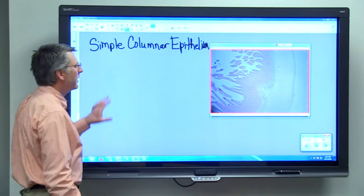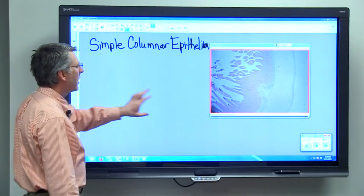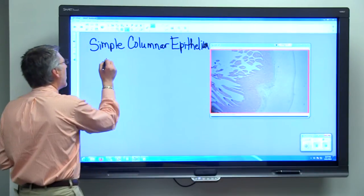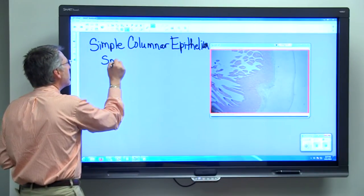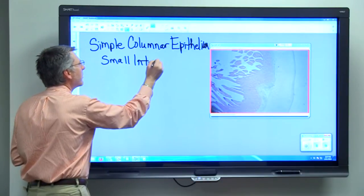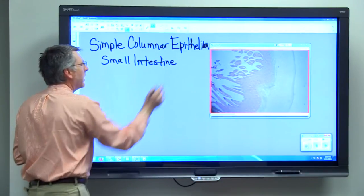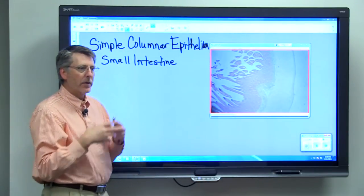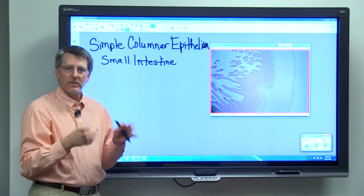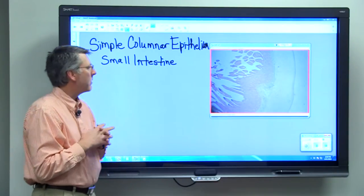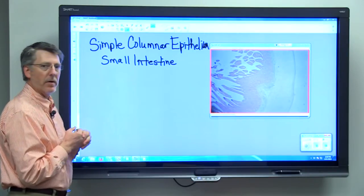To show you simple columnar epithelium, we want to look at a micrograph of the small intestine. The small intestine is a hollow organ. When you eat food, it goes to the stomach first and is churned and mixed, and then the chyme from your stomach goes into the small intestine.